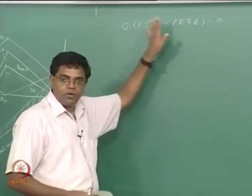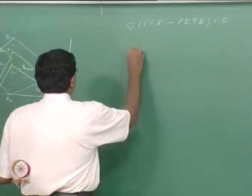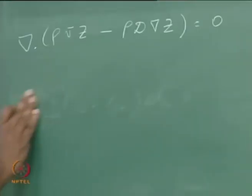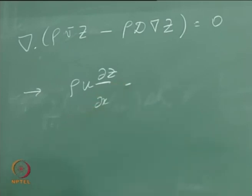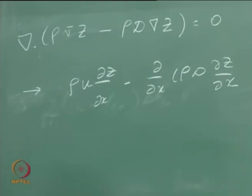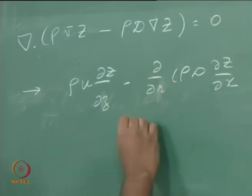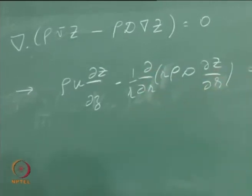For the Burke-Schumann problem in cylindrical polar coordinates, the mixture fraction evolution equation is: rho u (∂Z/∂x) minus (1/r)(∂/∂r)(r rho D ∂Z/∂r) = 0. Solving this gives Z(r, x), and the flame shape is located wherever Z equals Z_st.